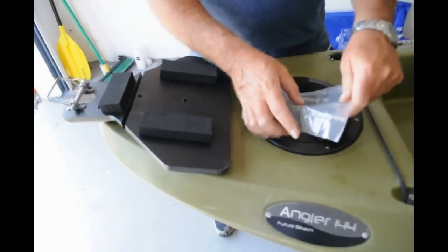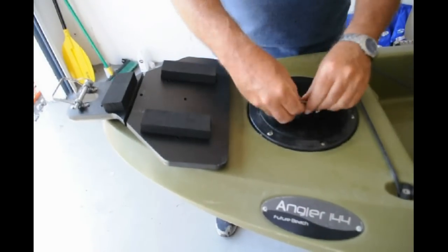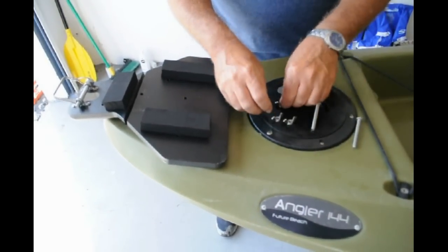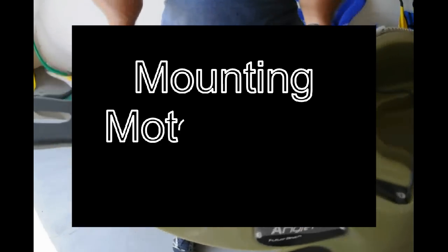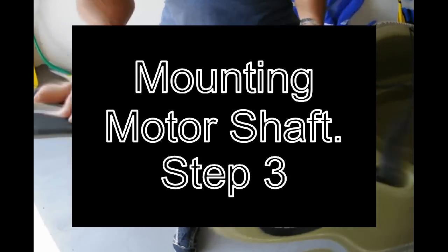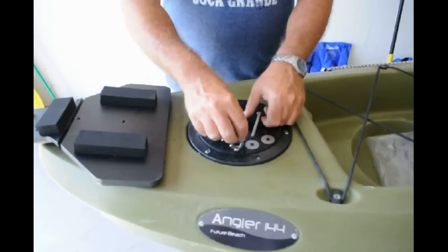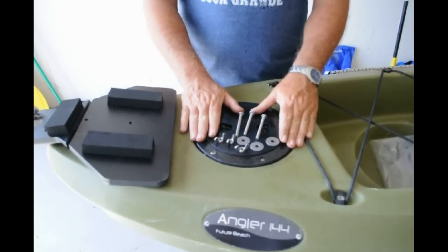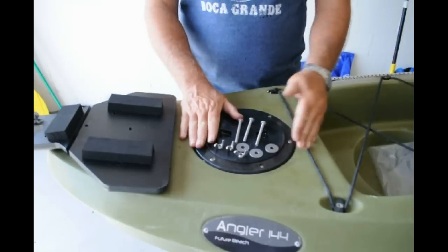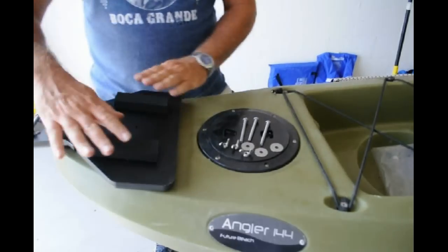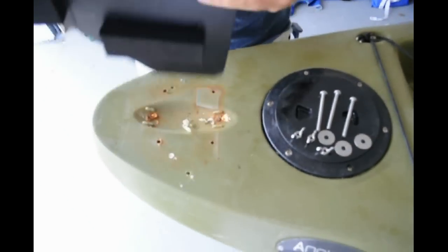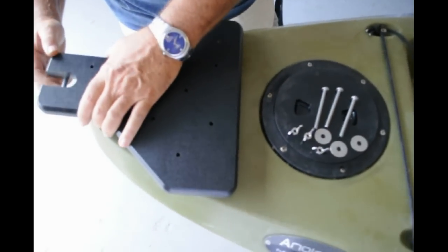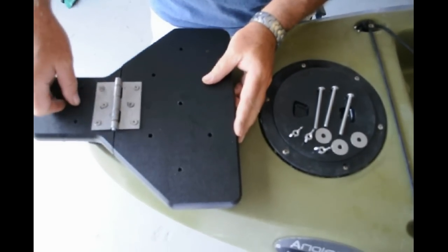We're going to put them on the side and we're going to today use the bolts and the washers. Today, we're going to be using the bolts, the washers, and the wing nuts because we have that access to get under. So now that we have put our neoprene onto the plate, we're going to flip it over and we're going to line it up as close to the stern as possible.